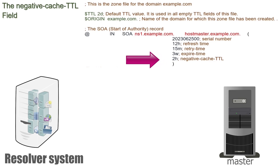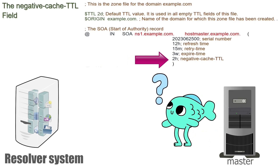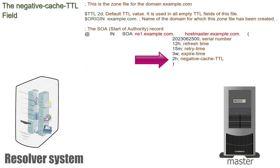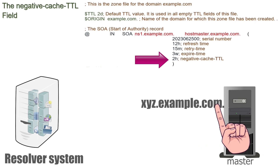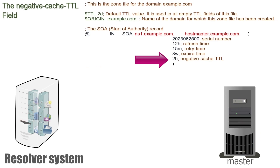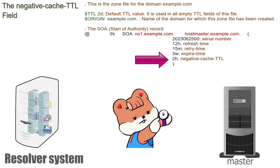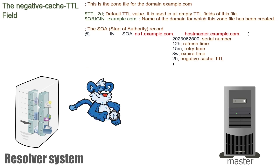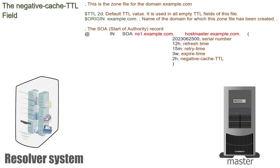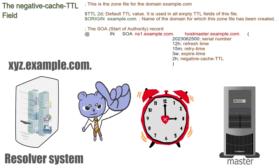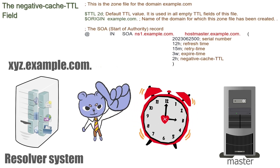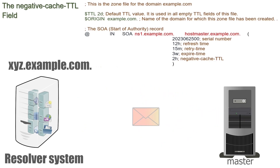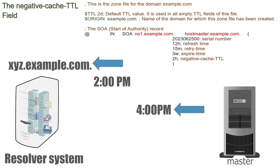Resolver systems use the negative cache value to store negative responses, and this value applies to all records served from this zone file. DNS provides this value in each answer. For example, suppose a resolver system asks this name server to resolve xyz.example.com. The server checks its zone file, finds no entry, and returns an error indicating the name does not exist. It also includes the negative cache TTL value in the error message. The resolver system saves the answer in cache and does not send a query for the same name again until the negative cache time expires — in this example, two hours. If a negative response is received at 2 PM, it will not retry until 4 PM.